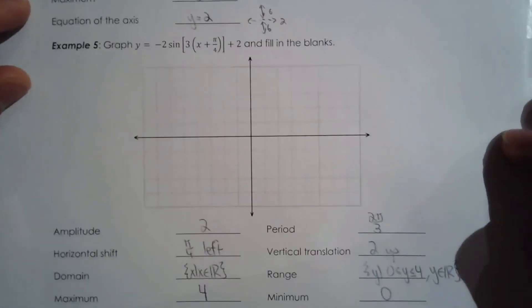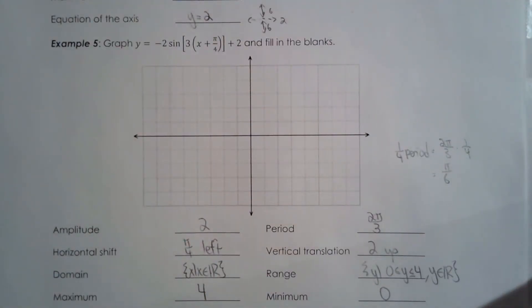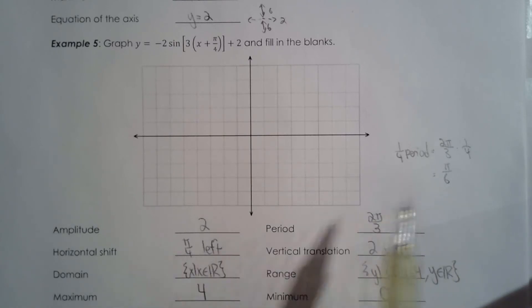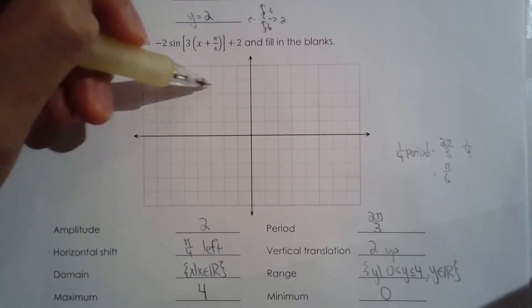Now I'll find the quarter period: one quarter times two pi over three equals pi over six. This is the horizontal separation between each of the five key points. Here's the problem we didn't encounter before — pi over four is not a multiple of pi over six. That means the key points won't naturally land on grid line intersections.